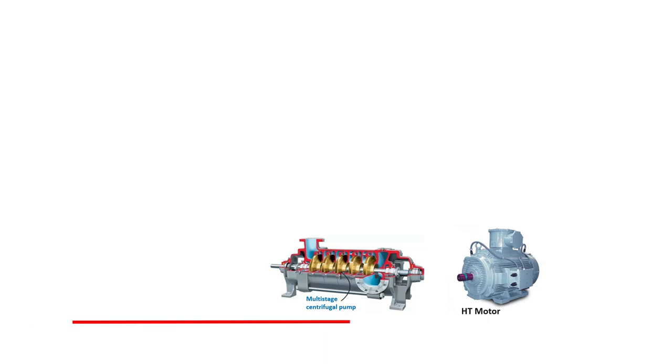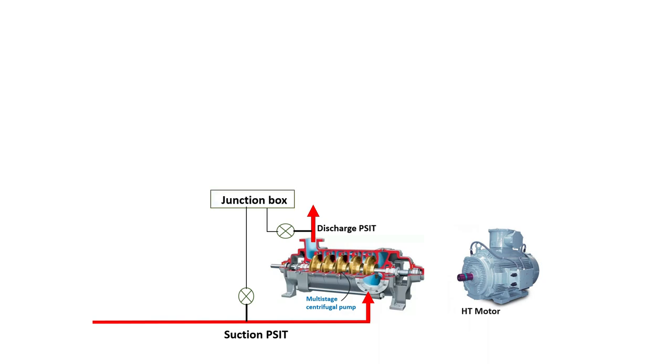Since it is a complex control signals scenario for a pump and motor, we have considered a multi-stage centrifugal pump and an HT motor so that the complex control signals can be discussed with different control systems. The multi-stage centrifugal pump has a suction line with a suction pressure transmitter, which is a safety transmitter, and a discharge line with a discharge pressure transmitter, also a safety transmitter. These run into a junction box, and we have DCS panels and PLC panels — two different panels.